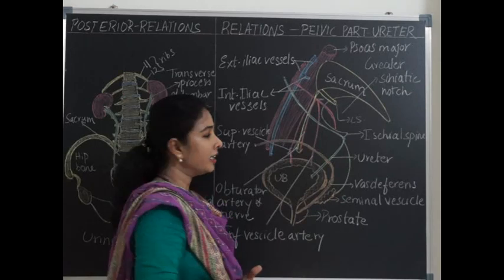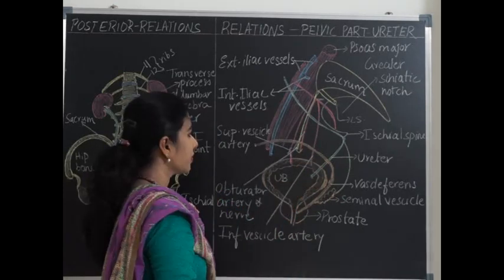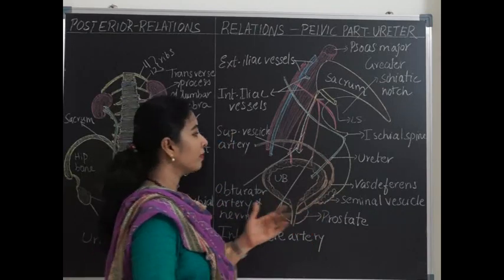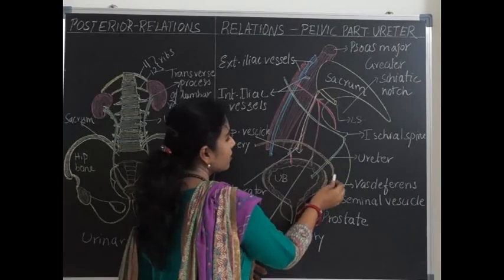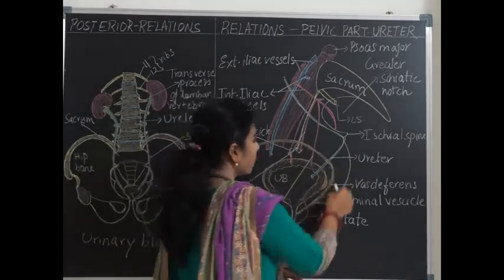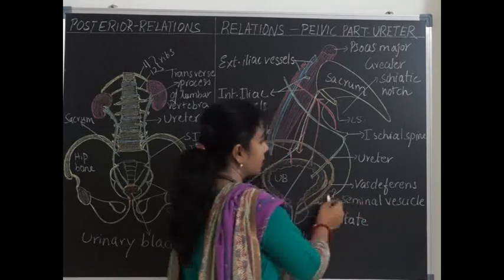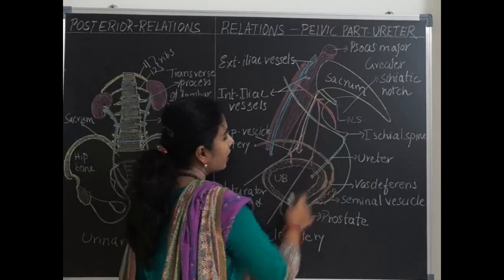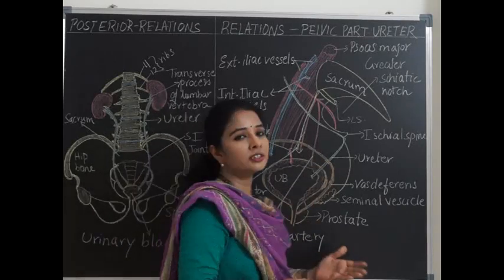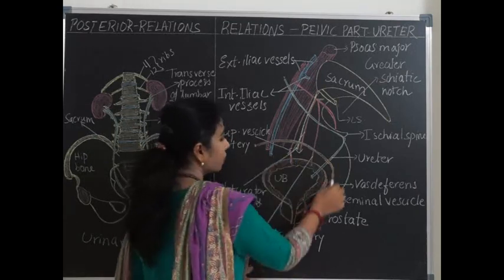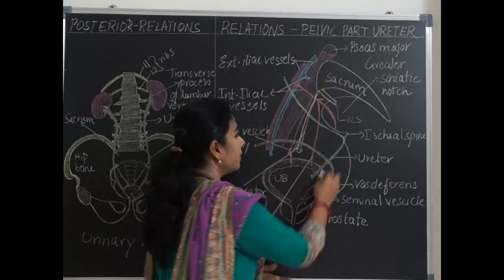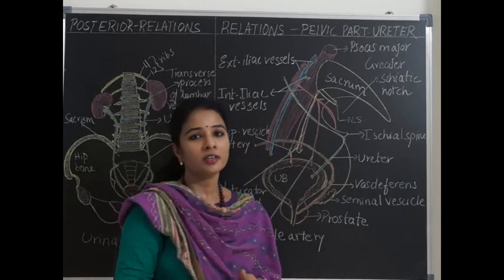The relations in the lower part of the ureter differ between males and females. In males, the ureter is crossed by the vas deferens, which crosses from lateral to medial, and it is also related posteriorly to the seminal vesicles. The ureter is surrounded in its lower part by the inferior vesical veins. In females, instead of the vas deferens, the ureter is crossed by the broad ligament of the uterus.